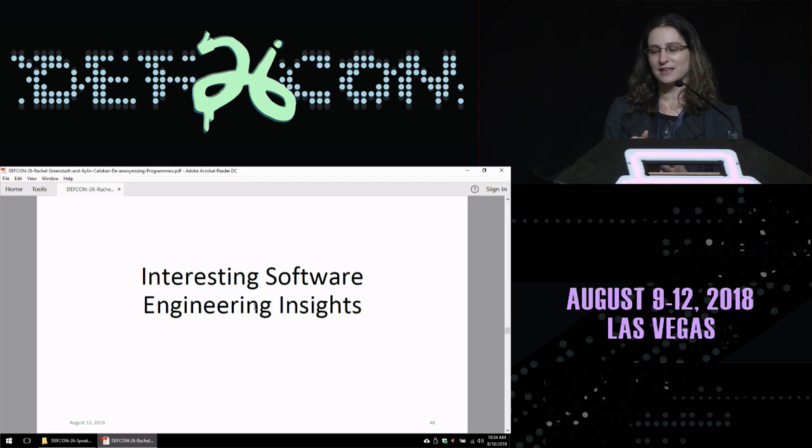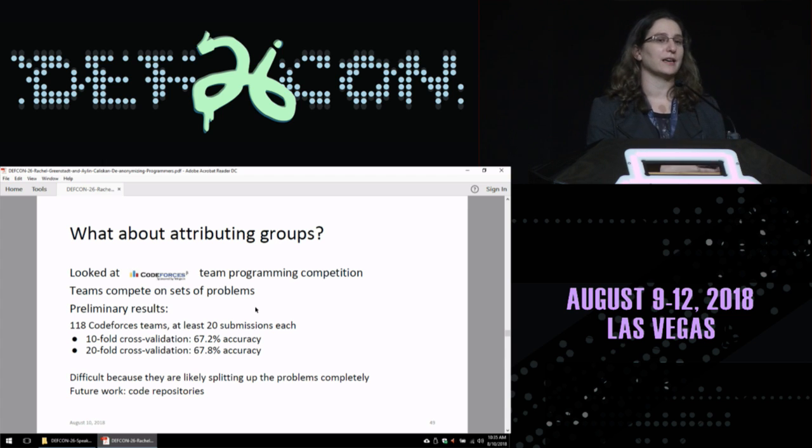I'm going to end the talk with a couple interesting software engineering insights that we've gathered as we've done this work about what makes programming unique, which I think is kind of fun. In general, we started with looking at attributing groups of people. There's another programming contest called the Code Forces contest, which has a team competition. The teams can compete on sets of problems. We have very preliminary results with 118 teams with about 20 submissions each. They get about 67% accuracy. I think this is one of the hardest cases for group attribution because the way that Code Forces works is it gives you a big group of problems to work on as a team together. So I think people are mostly splitting those up. So it's not actually group coding. I'm kind of surprised that it even works as well as it does at identifying the team. In the future, we'd like to work with some more code repositories to get a better sense of stuff that we know and can control for how much collaboration actually went into it.